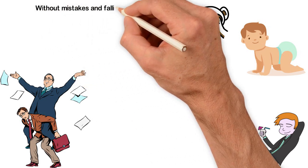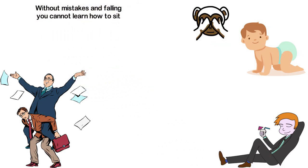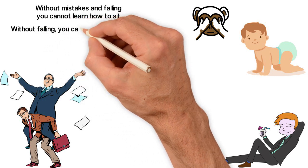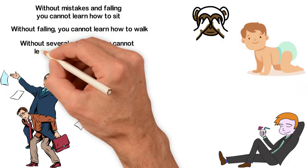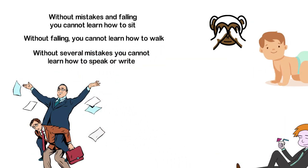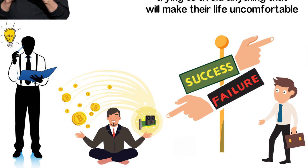Without mistakes and falling, you cannot learn how to sit. Without falling, you cannot learn how to walk. Without several mistakes, you cannot learn how to speak or write. In fact, if you pay attention to how life is programmed, you won't look far before you see that mistakes and failures are important processes to master life and succeed.